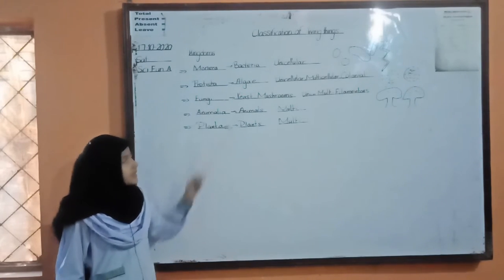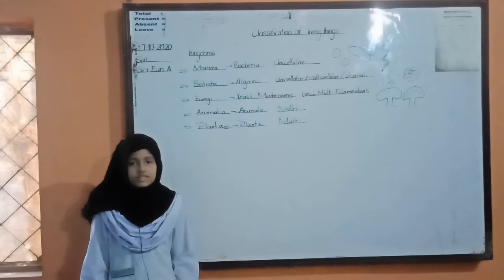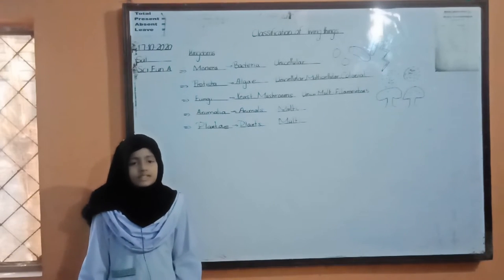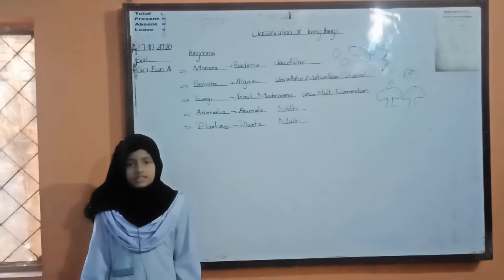Second kingdom is Kingdom Protista. Kingdom Protista consists of algae. Algae are found in water bodies like lakes, rivers, oceans, etc.